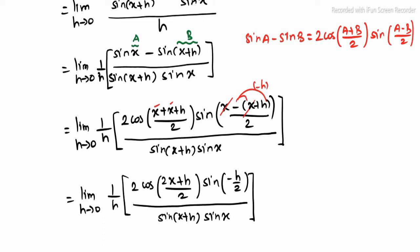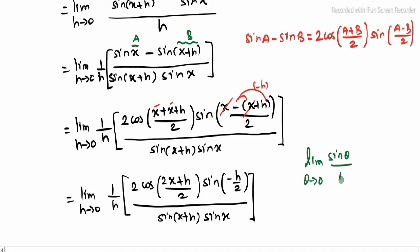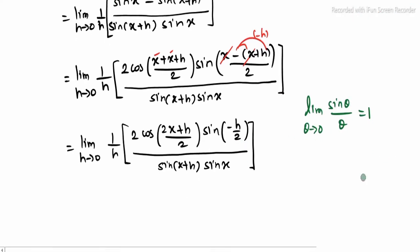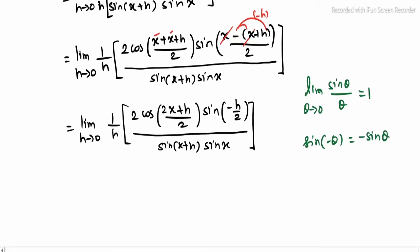Now in this place, limit theta tending to 0: sin theta divided by theta, that outcome is 1. For grouping change pannanon, for sin of minus h by 2, change pannanon. So that is sin of minus theta, it becomes minus sin theta, because sine is an odd function.